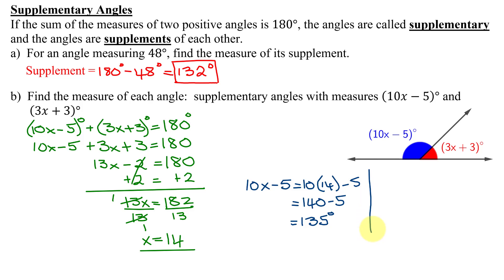And the second angle was 3x + 3 degrees. So I have 3(14) + 3. 3 times 14 is 42 plus 3, which equals 45 degrees.